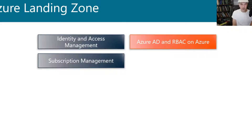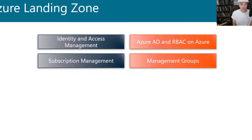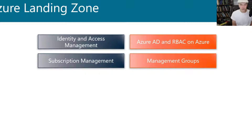The next thing we look at is subscription management. This is basically getting your subscriptions set up and managing them — management groups are how you do that. Subscription management depends on the kind of subscription you're using: EA subscriptions, pay-as-you-go, sponsored, or trial subscriptions. Management groups give you the ability to set up hierarchies that reflect your organizational or functional structures, so you can create groups of subscriptions and assign RBAC at a high level rather than managing every single subscription individually.